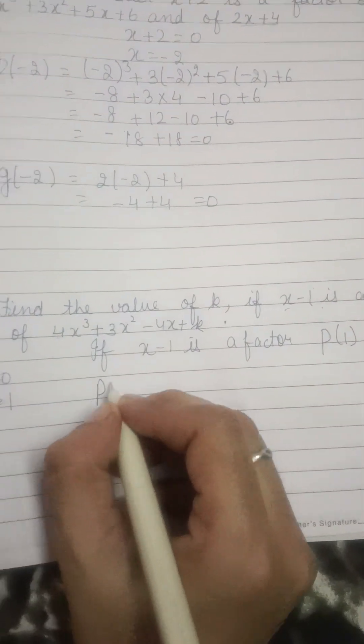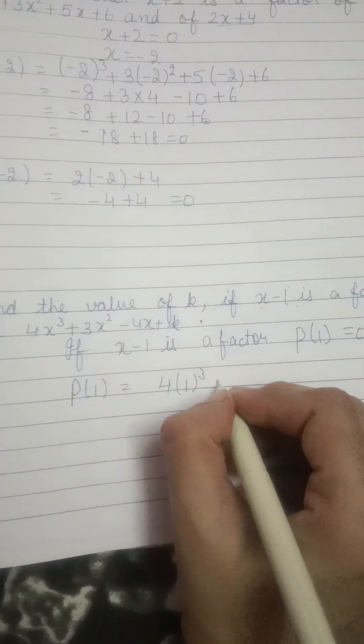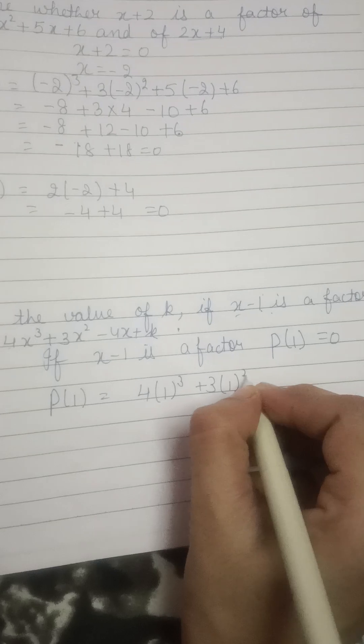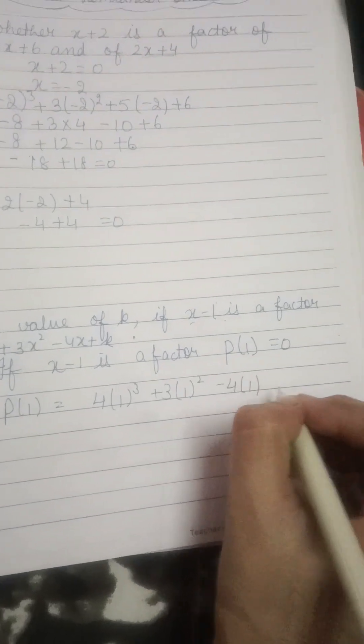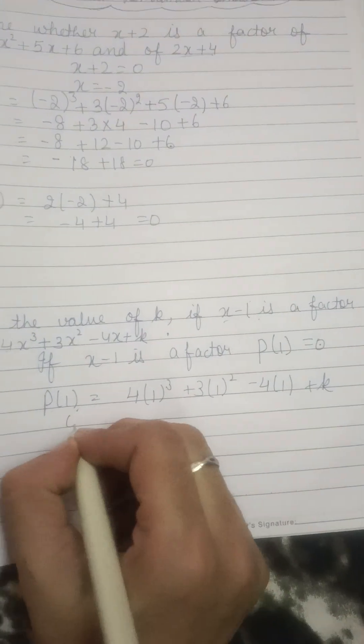यहाँ put कर लेंगे, p of 1 is equal to 4, 1 cube plus 3, 1 square minus 4, 1 plus k. Put कर दो, p of 1 is 0.